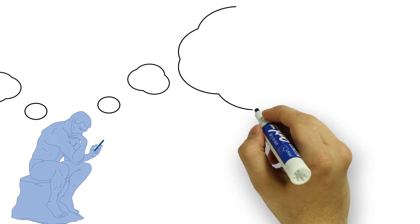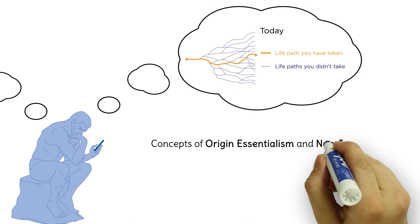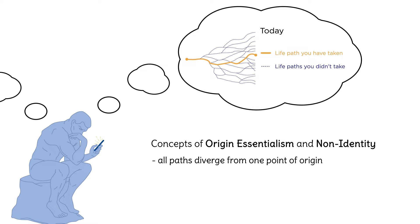Secondly, the existence of a specific person always originates in a specific physical setting of time, place, and a material substance such as a genetic heritage.